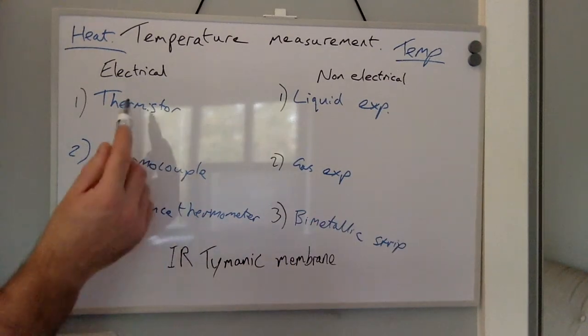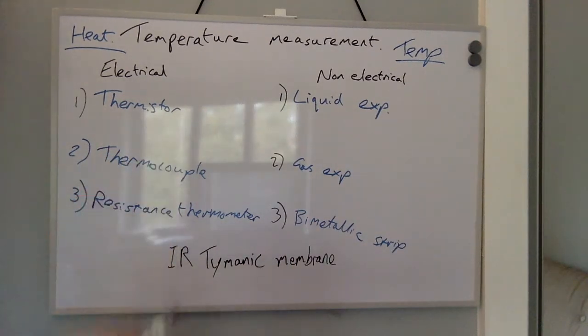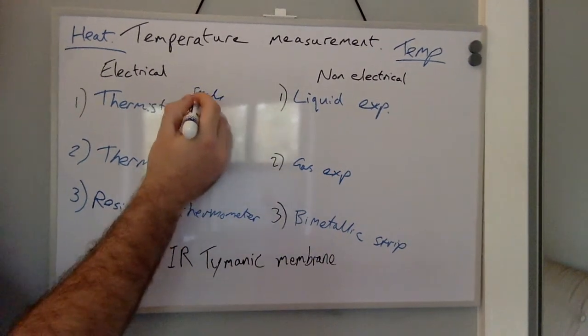To go through each of these in turn now. The thermistor, the benefits are that they're small and relatively cheap to produce.